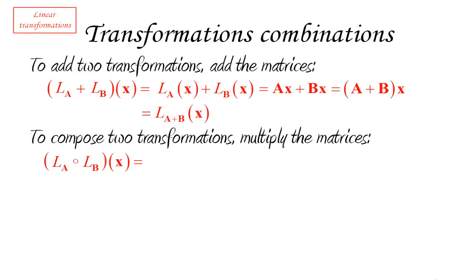It means that once we apply to a vector X, we first are going to use LB. And then whatever comes out of LB times X, we're going to apply LA to it, which means that what that formula means is we're going to compute LA of LB of X.